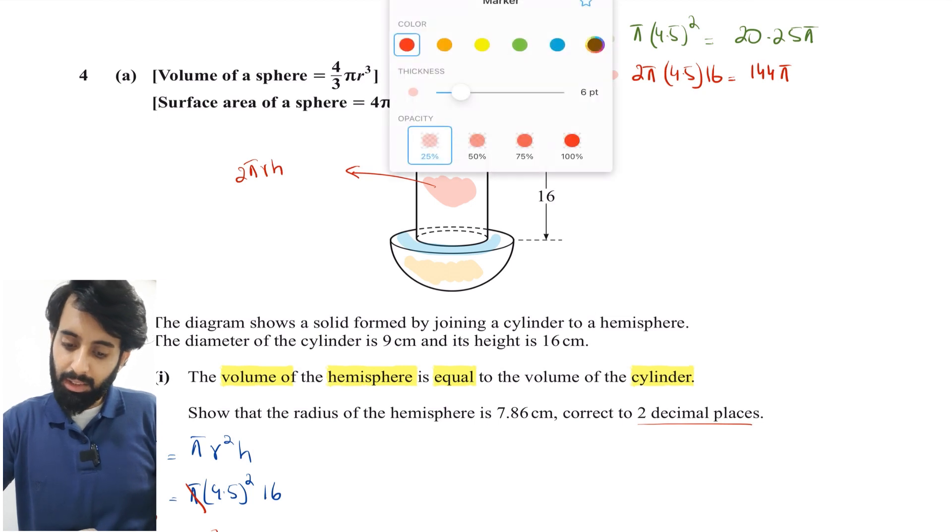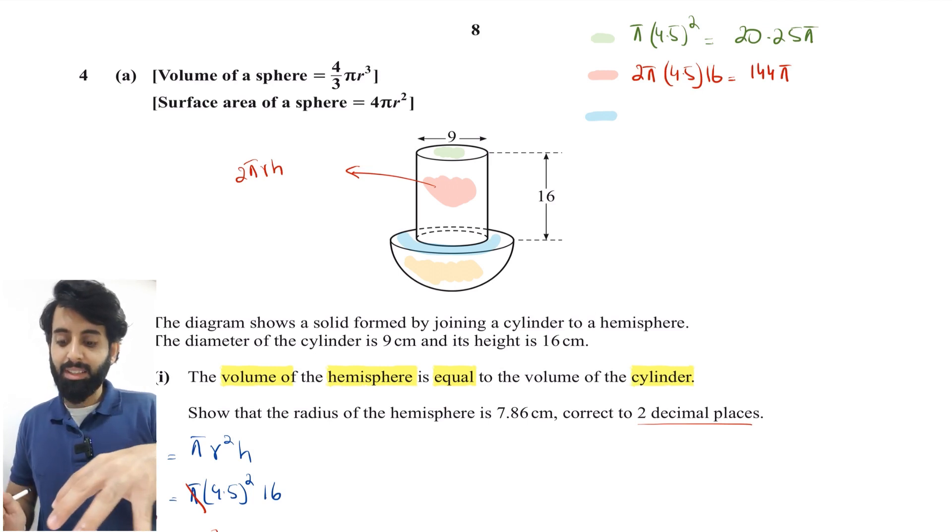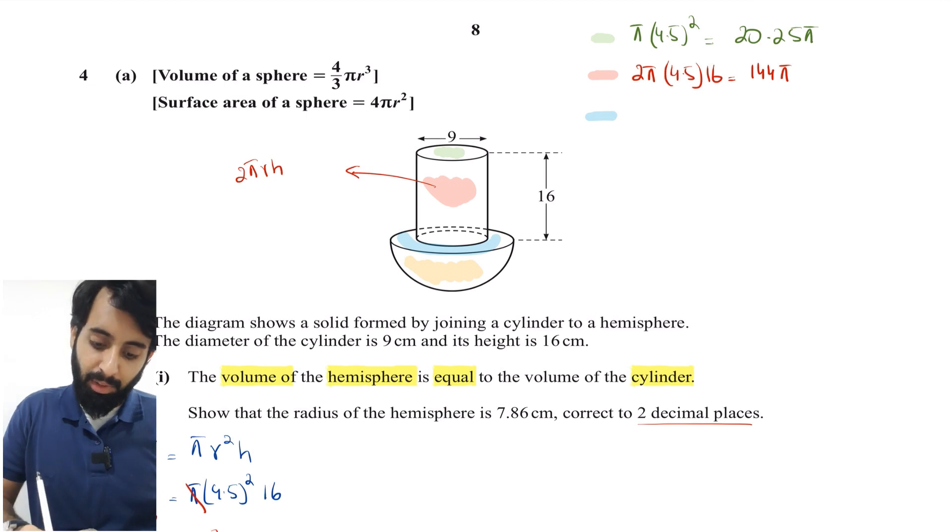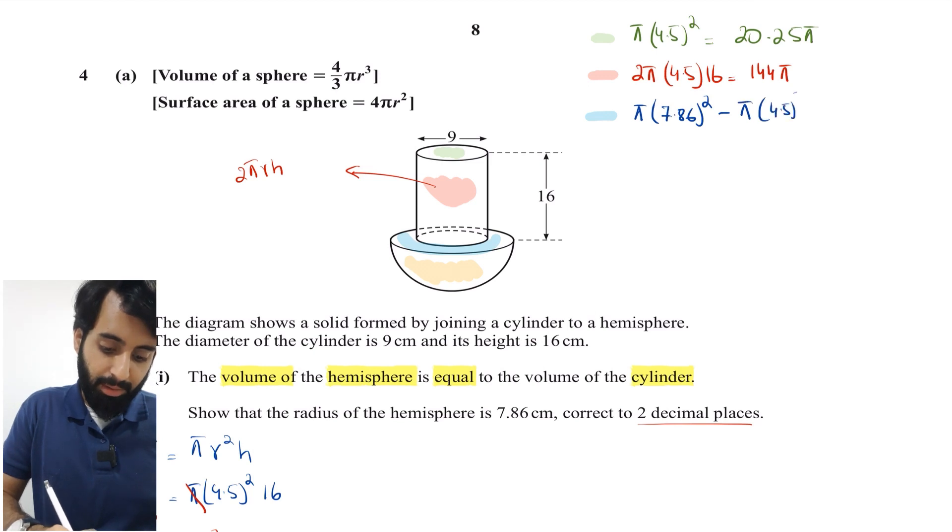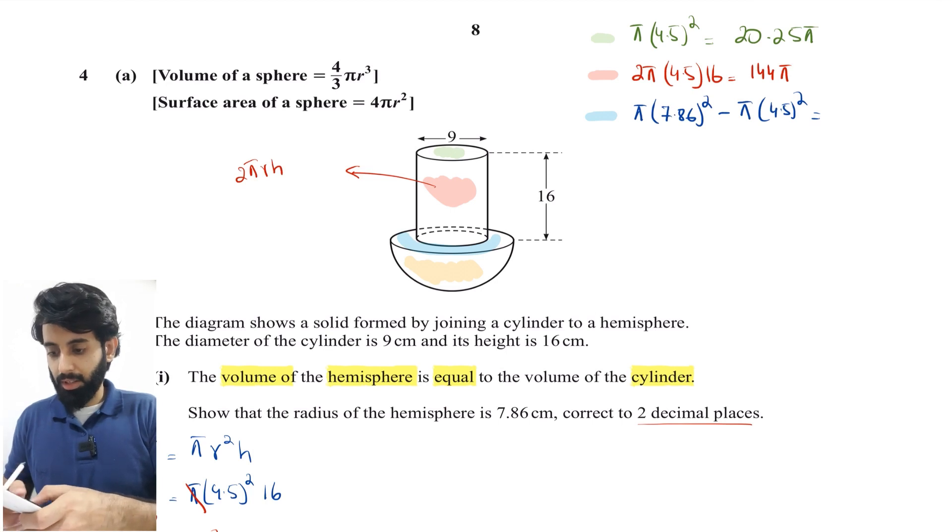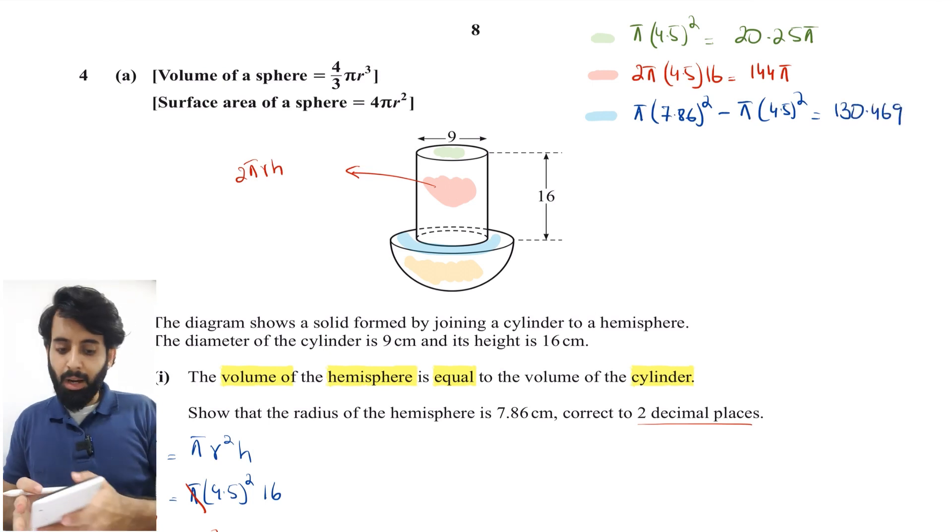Let's discuss the surface I've highlighted in blue. That's a larger circle of the hemisphere minus the smaller circle of the cylinder. So π(7.86)² - π(4.5)². Let's get to work: π(7.86)² - π(4.5)² equals 130.469. I'm not estimating immediately because we'll do that at the end.